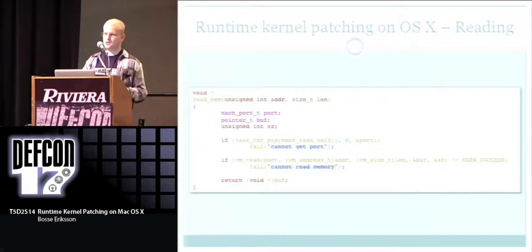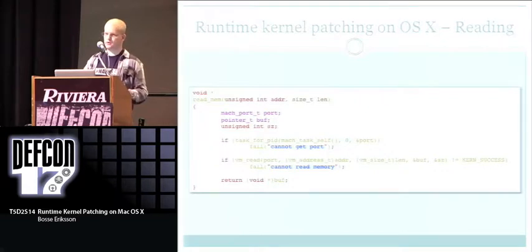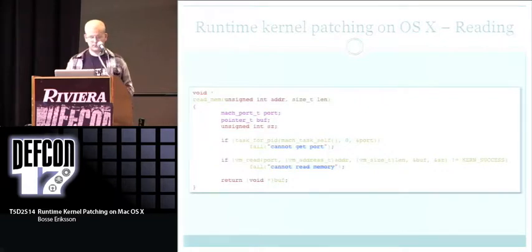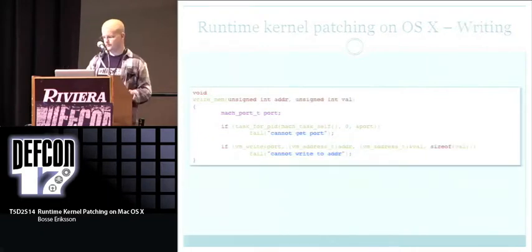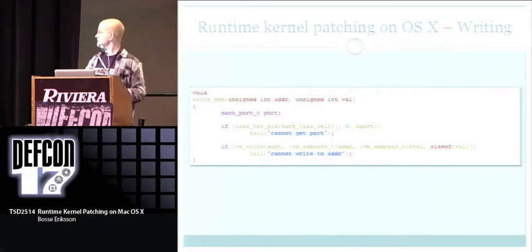It's that easy — literally about 10 lines of code to read kernel memory as root. It's pretty awesome if you want to rootkit a machine. Here's the same function but for writing kernel memory: same thing, task_for_pid, VMWrite, and you're good to go. And similarly for allocating — just a one-line change.